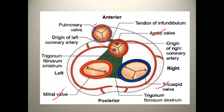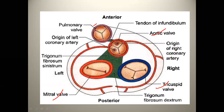Trigonum Fibrosum Dextrum large होता है, बड़ा mass होता है. ये देखें — ये Tricuspid और Mitral के बीच में है, और इधर Aortic के पीछे है. तो Aortic के पीछे है और इन दोनों के बीच में — ये Trigonum Fibrosum Dextrum जा रहा है.